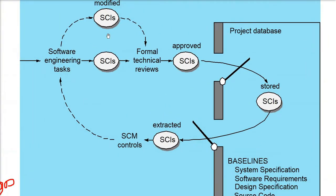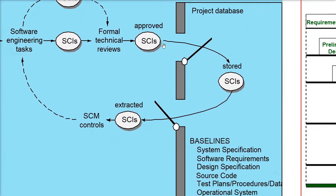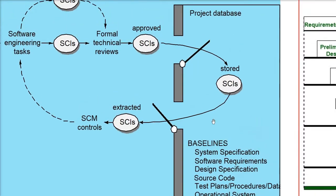There is a box with an opening and closing on the right. These SCIs can only be picked up from that box when you follow a formal technical review procedure. The SCIs can include system specification, software requirements, design, source code, and many others.